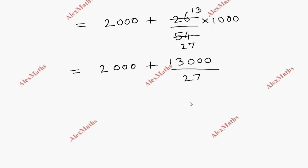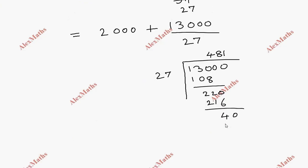If we do the division, we can go on. 13,000 divided by 27. 27 times 4 is 108, balance 22. Bring down 0, 220. 27 times 8 is 216, balance 4. Bring down 0, 40. 27 times 1 is 27, balance 13.